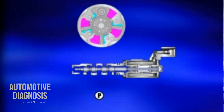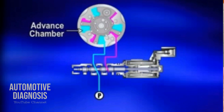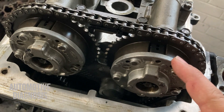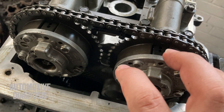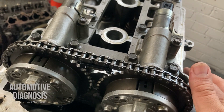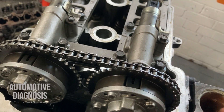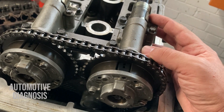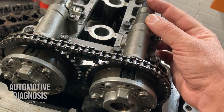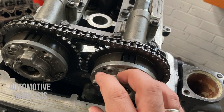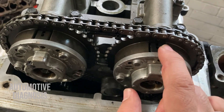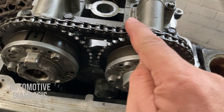Inside the VVT mechanism we have two chambers — one chamber for advance and the other for retard. When the ECM wants to advance the valve timing, it adjusts the VVT solenoid to provide oil to the advance chambers, so the camshaft rotates in the direction of engine rotation to advance the valves. When the ECM wants to retard, it provides oil to the retard chambers, so the camshaft rotates in the opposite direction.